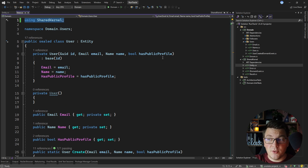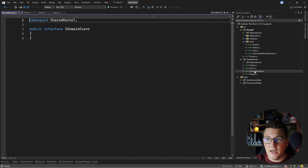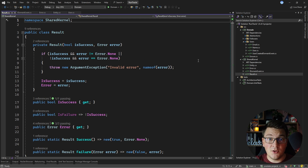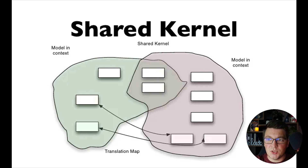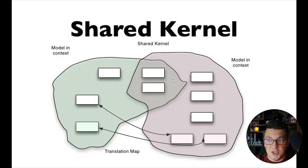Using this approach, we are able to share our components — like the entity, error, IDomainEvent, and the result object — between multiple bounded contexts in our domain. This makes it easier for us to maintain these shared components and prevent code duplication. The shared kernel doesn't necessarily only have to contain generic types like this; it could also contain entities and value objects that we need to share between multiple bounded contexts, as shown on this diagram where there is an overlap between our bounded contexts representing the shared kernel.